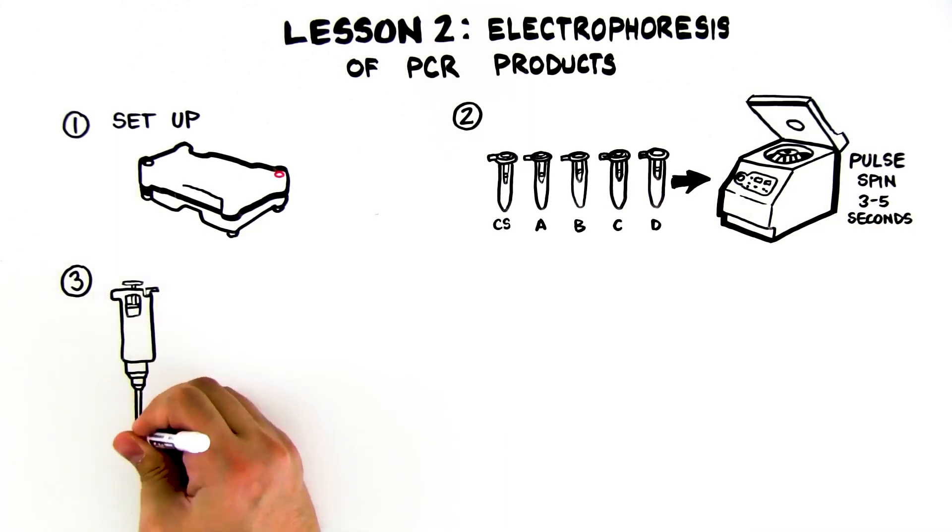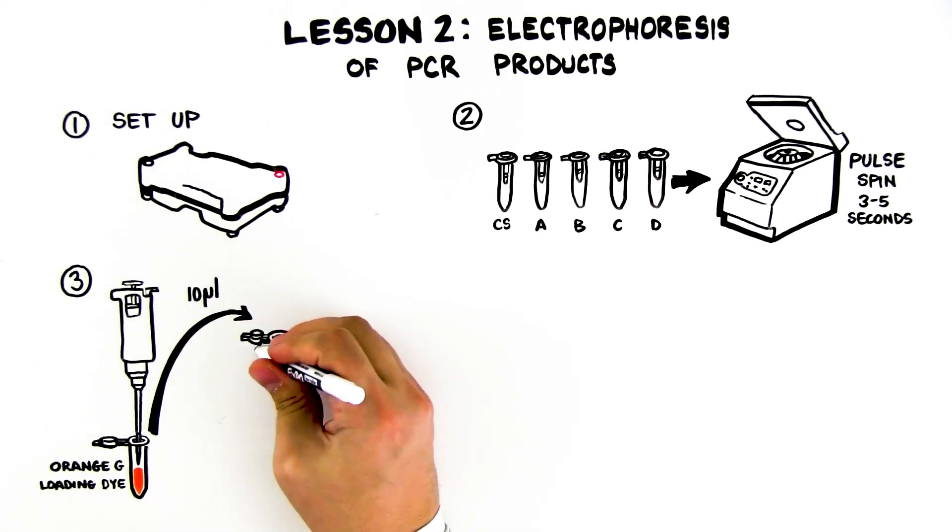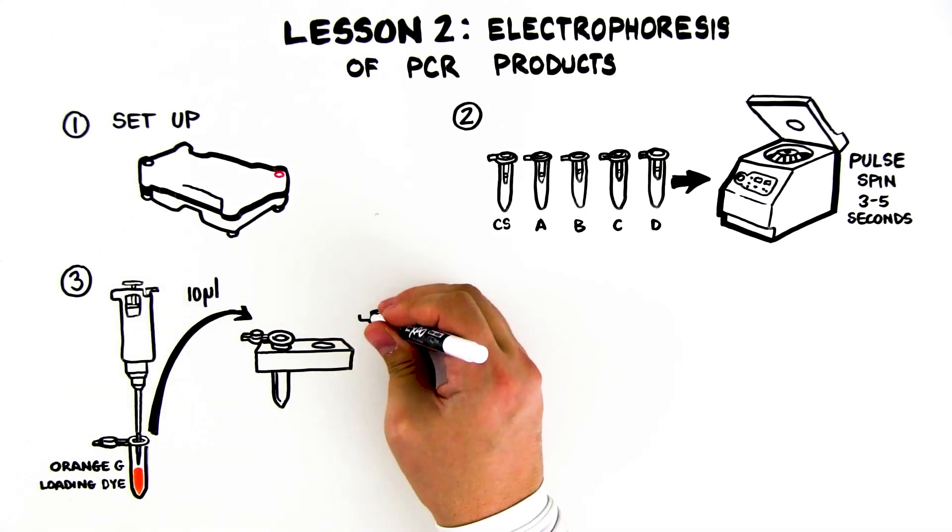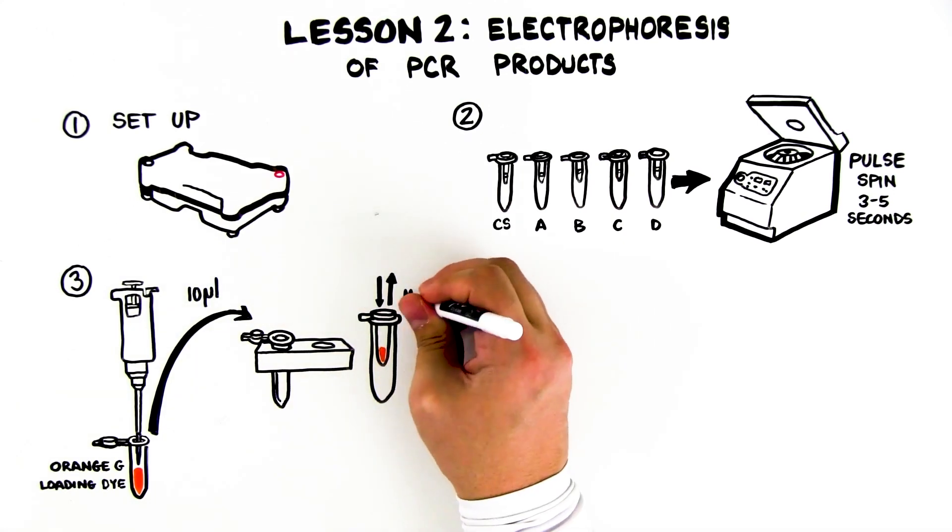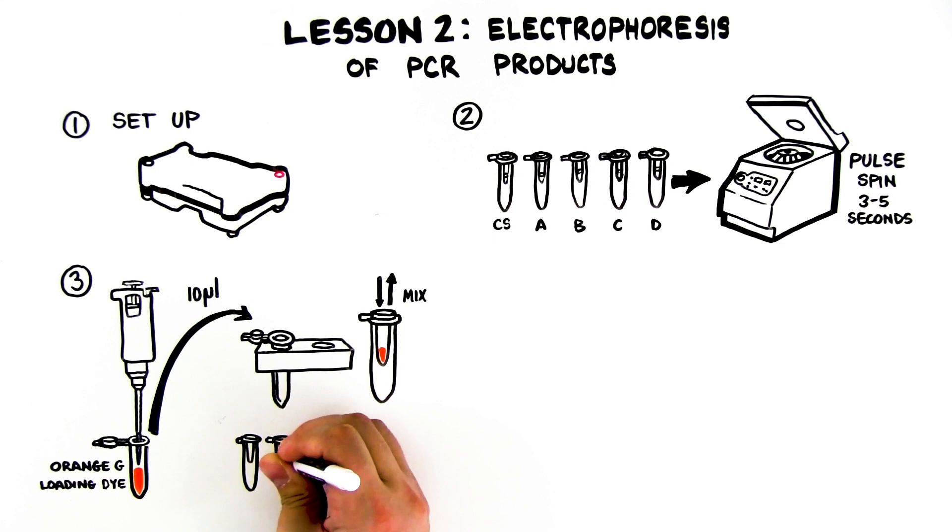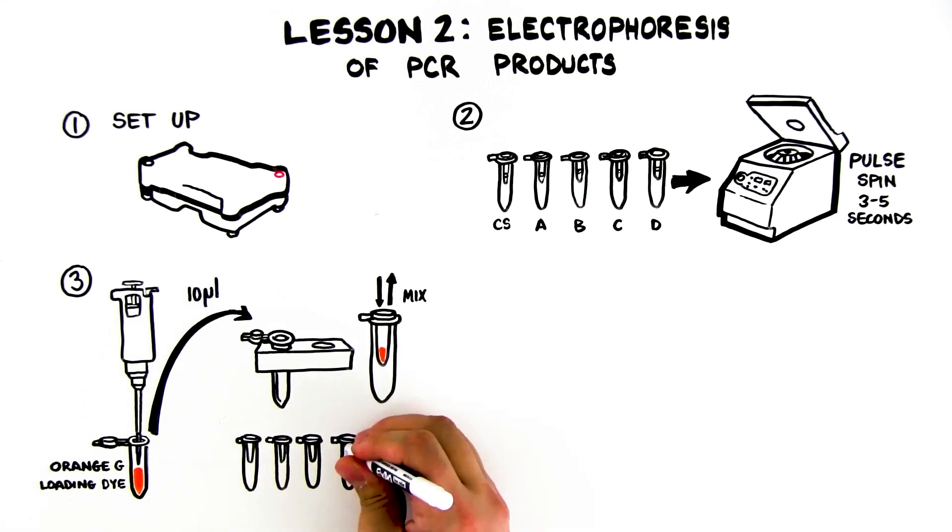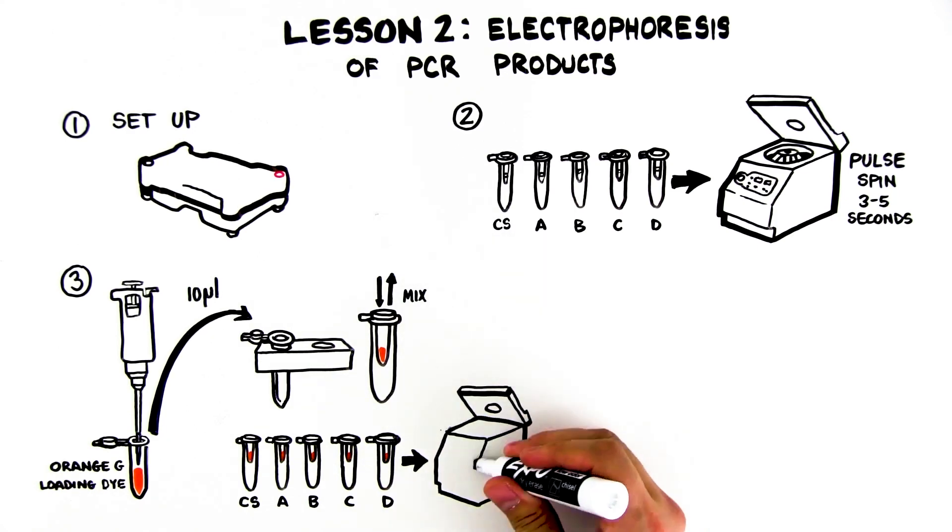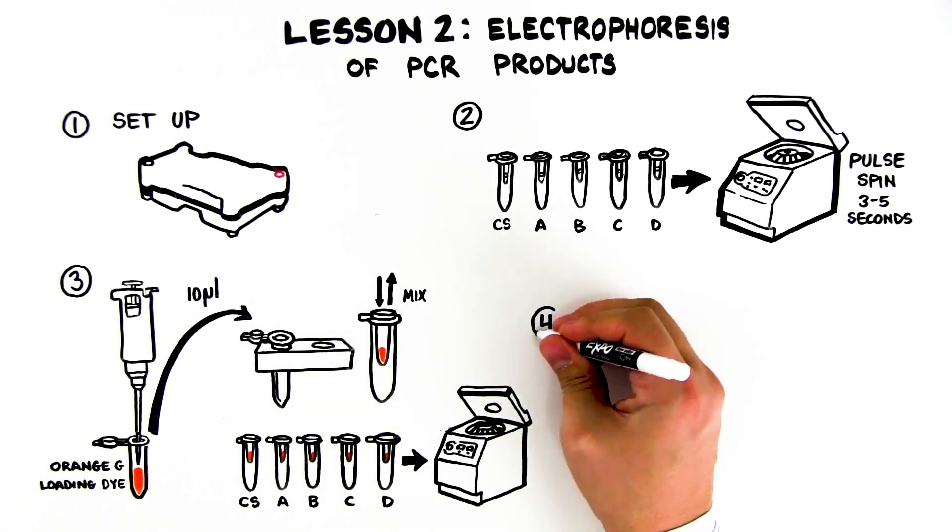Step 3: Using a fresh tip each time, transfer 10 microliters of Orange G loading dye from the tube labeled LD into each of your PCR tubes. Pipette up and down to mix the contents of each tube. When finished adding loading dye to all tubes, place them into capless tubes and pulse spin in a balanced microcentrifuge to collect liquid in the bottom of the tube.